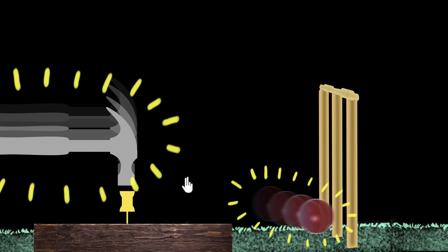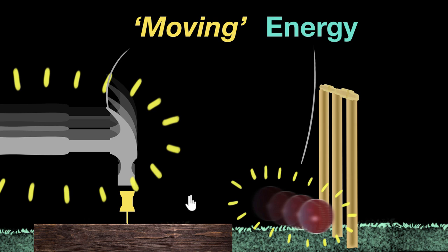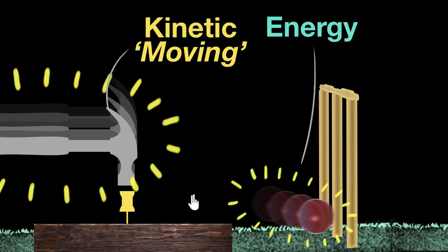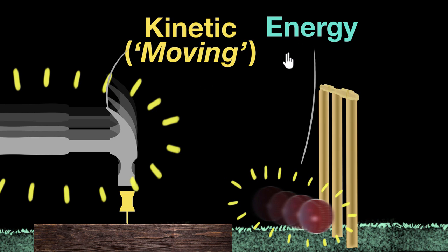We can give a name to this energy — we can call this moving energy. But in physics, we give a more technical term: it's called kinetic energy. Energy of an object due to its motion is called kinetic energy. Some other examples include wind, which is moving air, so that's kinetic energy. Even waves in water have kinetic energy because there is also motion involved.